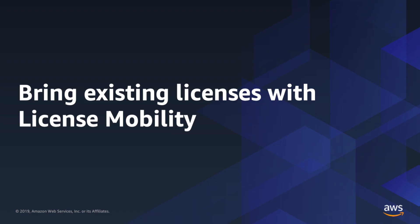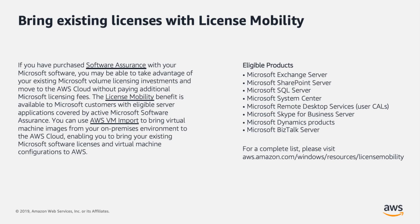If you've purchased Software Assurance with your Microsoft software, you may be able to take advantage of your existing Microsoft volume licensing investments and move to the AWS cloud without paying additional Microsoft licensing fees. The license mobility benefit is available to Microsoft customers with eligible server applications covered by Active Microsoft Software Assurance. You can use AWS VM Import or CloudEndure to bring virtual machine images from your on-premises environment to the AWS cloud, enabling you to bring your existing Microsoft software licenses and virtual machine configurations to AWS.